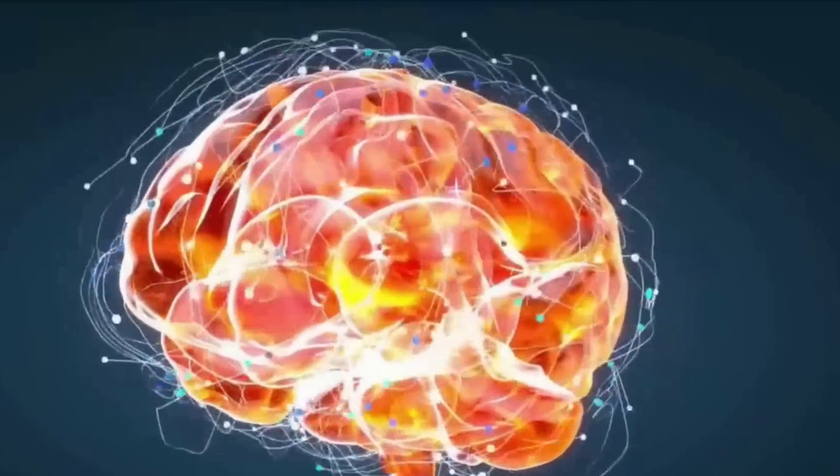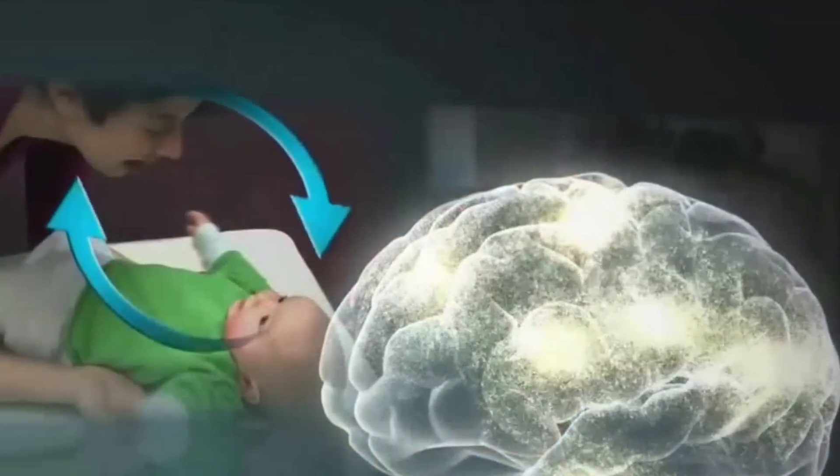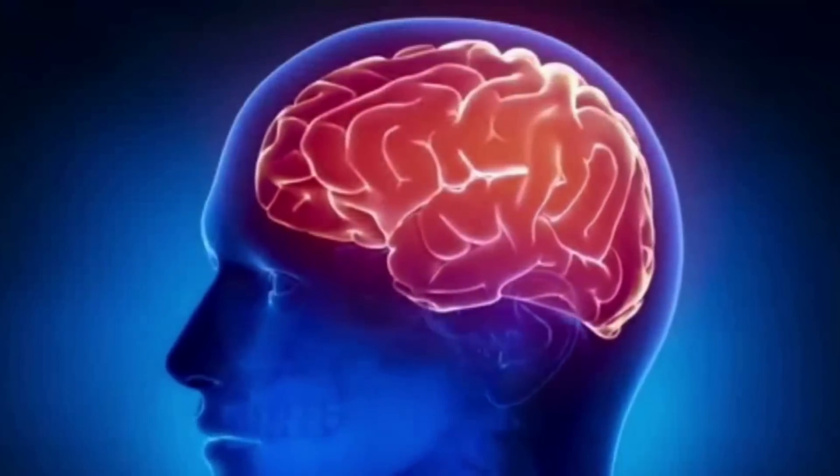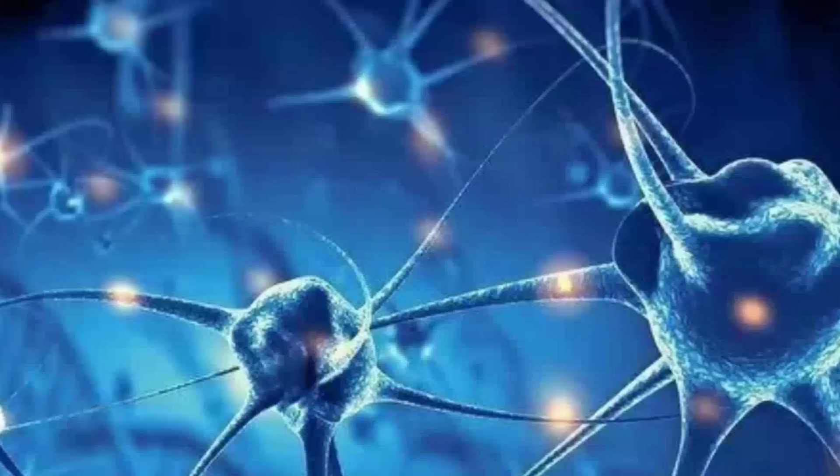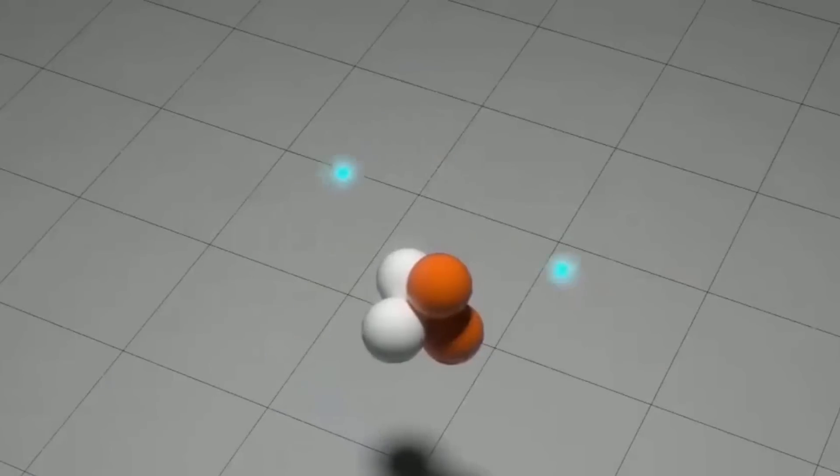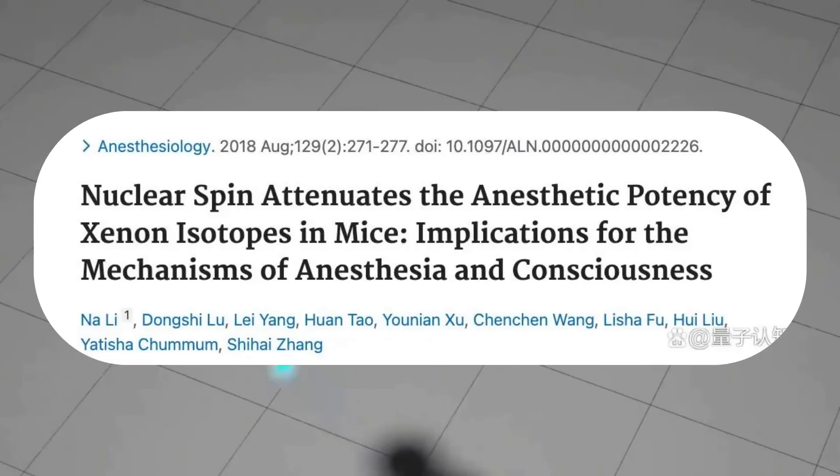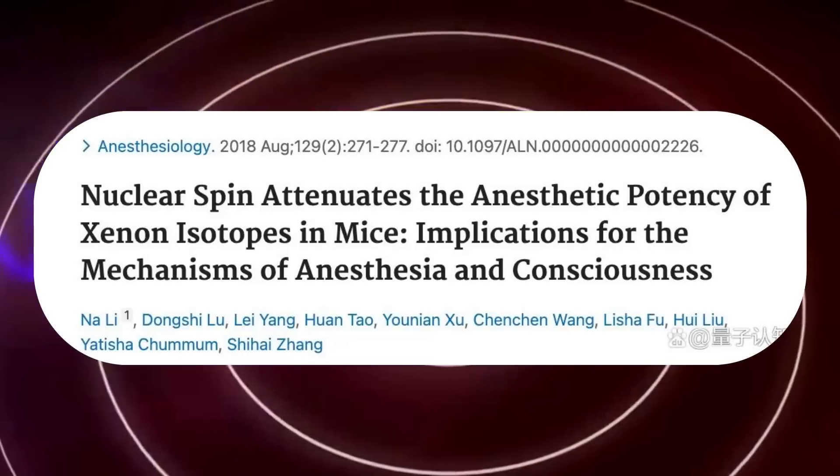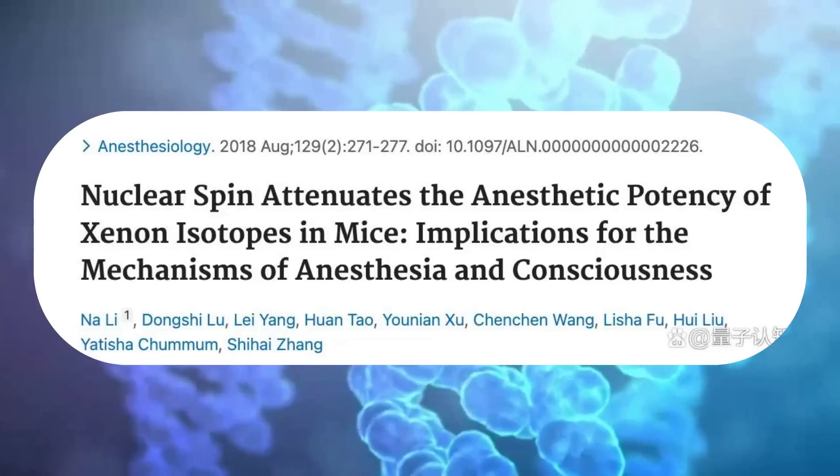Scientists have discovered evidence that our brains may use quantum mechanisms to process information. Some isotope spin changes in the brain may also affect our body and brain reactions. For example, xenon with a nuclear spin of one-half can produce anesthesia, while xenon without spin cannot.